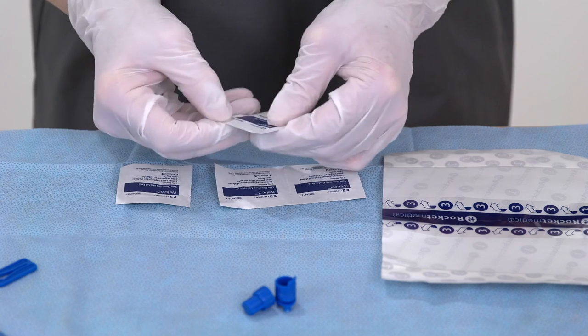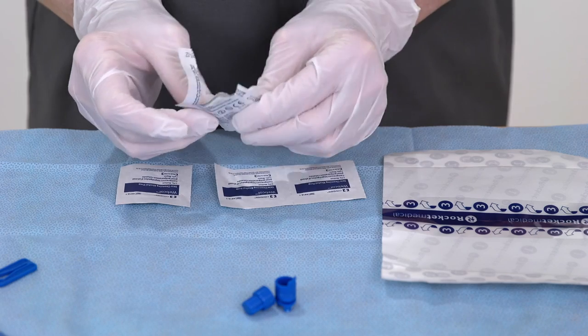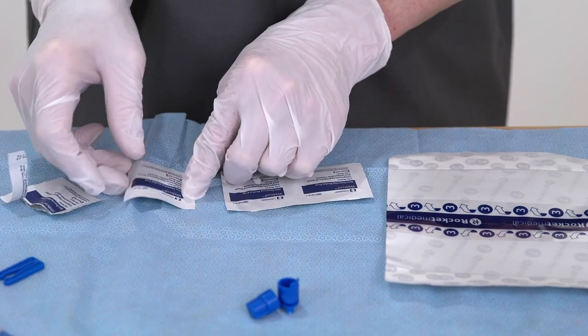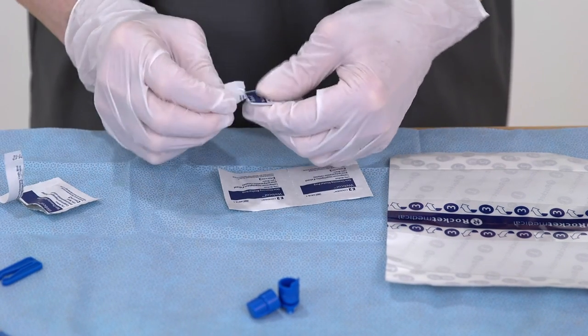Tear open the four alcohol wipe pouches, but do not remove the contents. Place these on the sterile field away from the rest of the items.